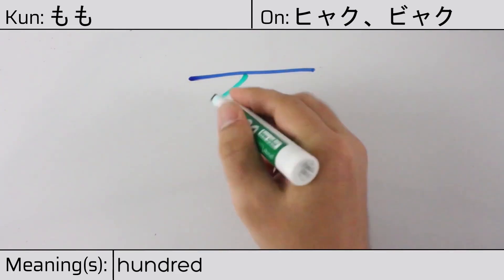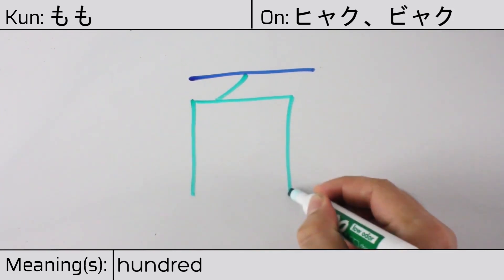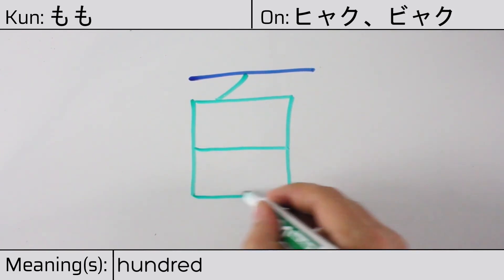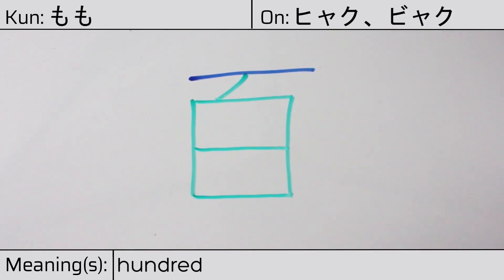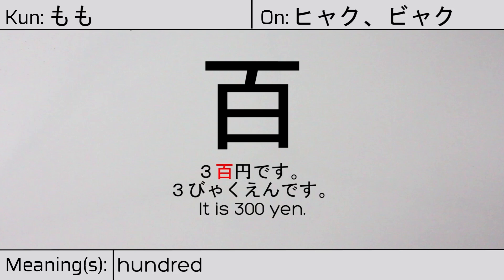This character is made up of the following radicals or parts: kanji ichi, followed by white shiro. You can remember this kanji by the following hint: one bite of cooked rice, which is white, contains a hundred grains. Our example sentence is: Sanbyaku yen desu — It is 300 yen.